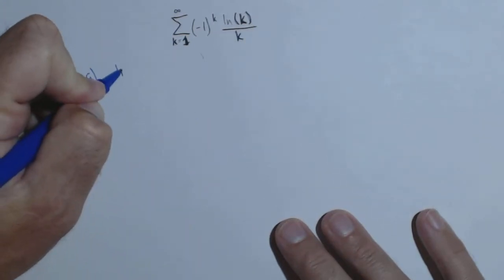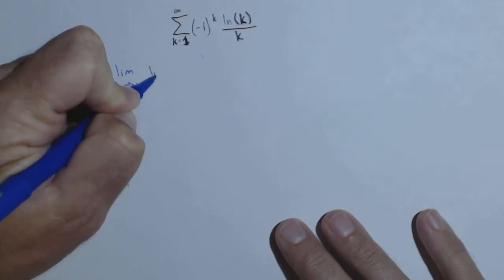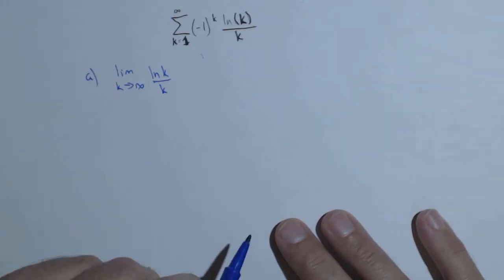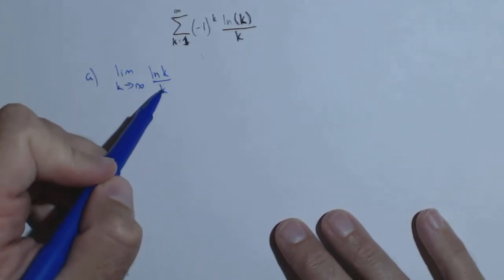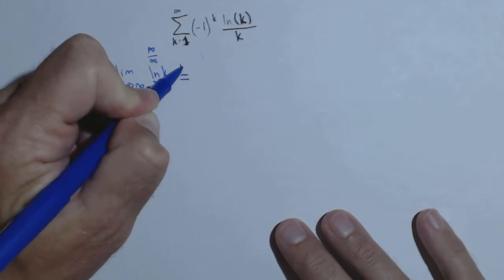So that means we just need to look at the limit as k goes to infinity of ln of k over k. Now, this goes to infinity and this goes to infinity. So we have an infinity over infinity case. So using L'Hopital's rule,